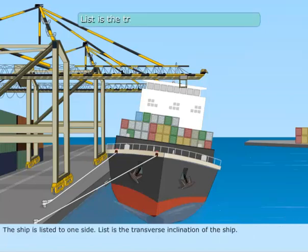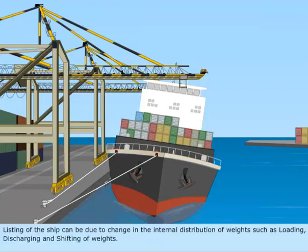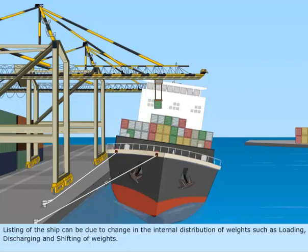List is the transverse inclination of the ship. Listing of the ship can be due to change in the internal distribution of weights, such as loading, discharging, and shifting of weights.